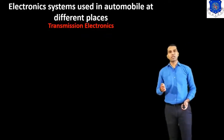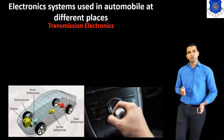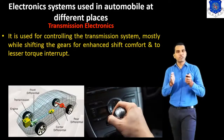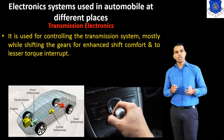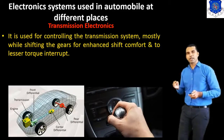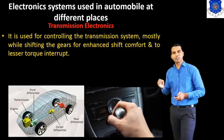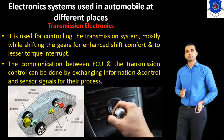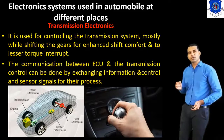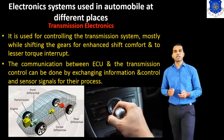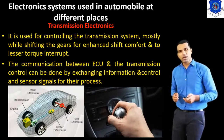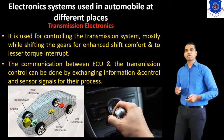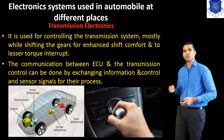Next one is the transmission electronics. It is used for controlling the transmission system, mostly while shifting gears, for enhanced shift comfort and to lessen torque interruption. The communication between ECU and transmission control is done by exchanging information, control signals, and sensor signals for that process.